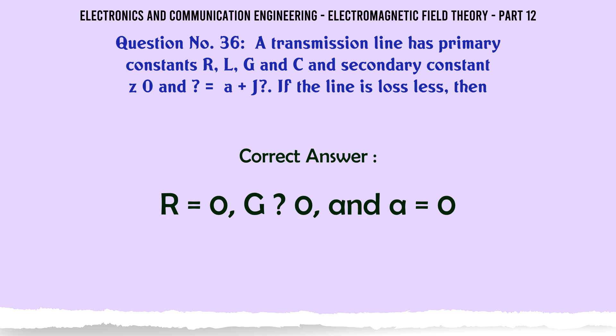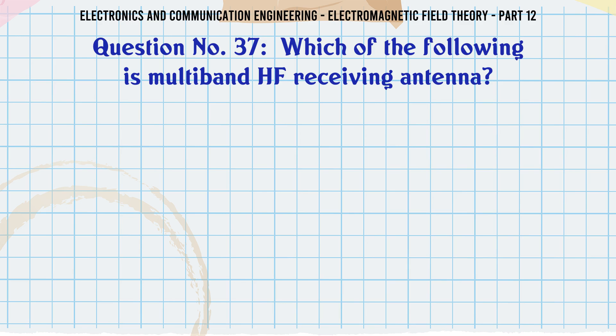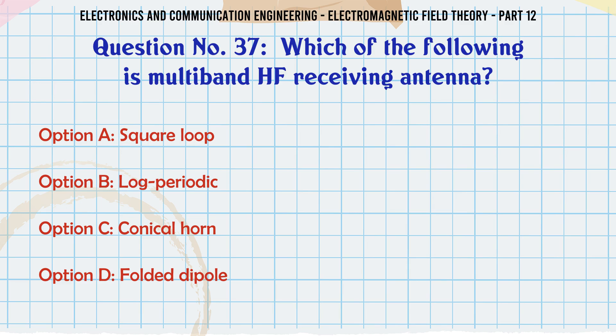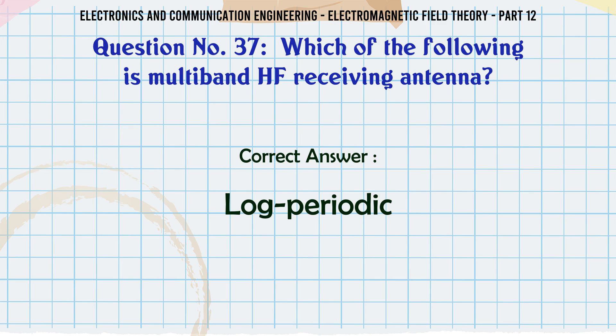Which of the following is a multiband HF receiving antenna? A. Square loop, B. Log periodic, C. Conical horn, D. Folded dipole. The correct answer is Log periodic.